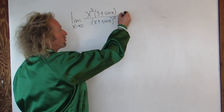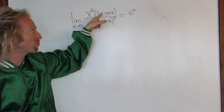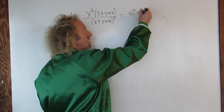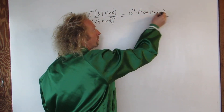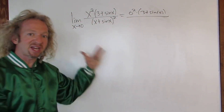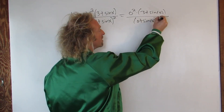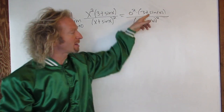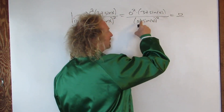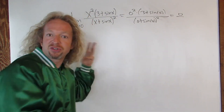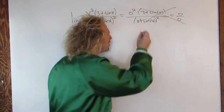You get zero squared times, and then here it's three plus the sine of zero — so three plus sine zero — and then on the bottom we have zero plus sine zero, and this whole thing is being squared. So the top: zero times anything is zero, so we just get zero. And then on the bottom: zero plus sine zero is zero, so zero squared is zero. So this fails — this is a huge fail.